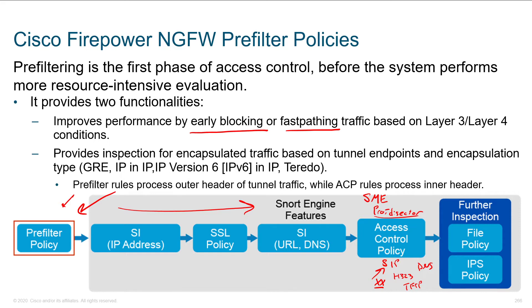Additionally, the pre-filter provides inspection for encapsulated traffic based on tunnel endpoints. If traffic comes in as GRE or IP-in-IP — you can put an IP packet inside of another IP packet — or IPv6 in IPv4, or Teredo tunnels, then as traffic arrives, if we detect encapsulation, we go ahead and decode it to figure out what's happening. Or if we're not going to accept it, we toss it as soon as we can.